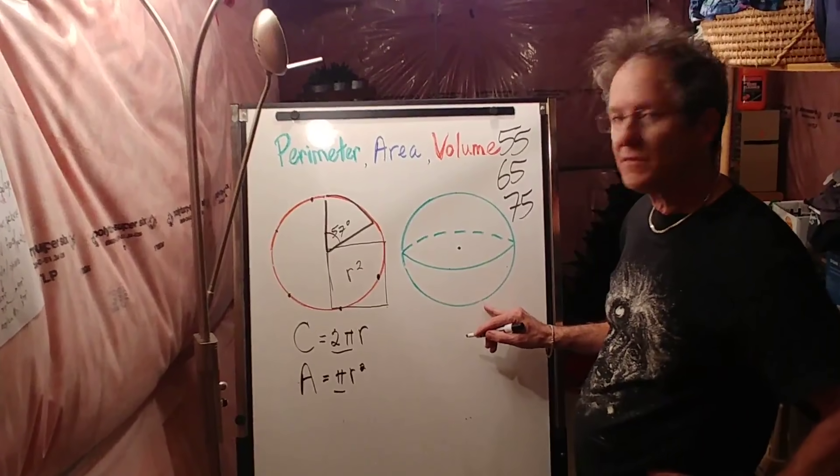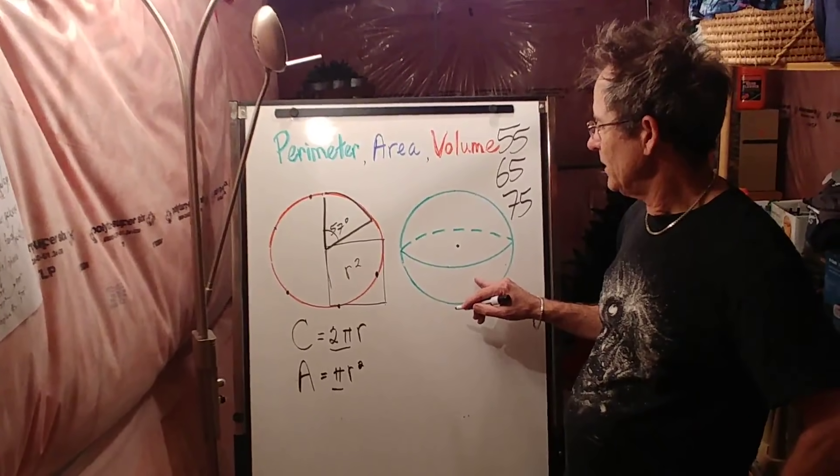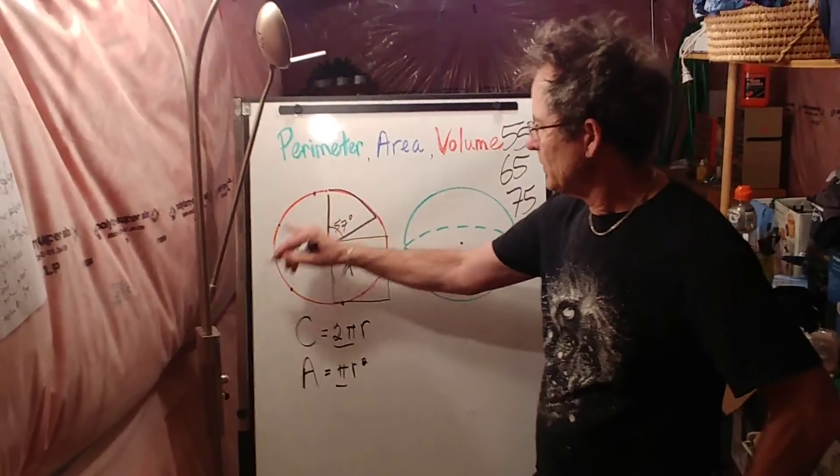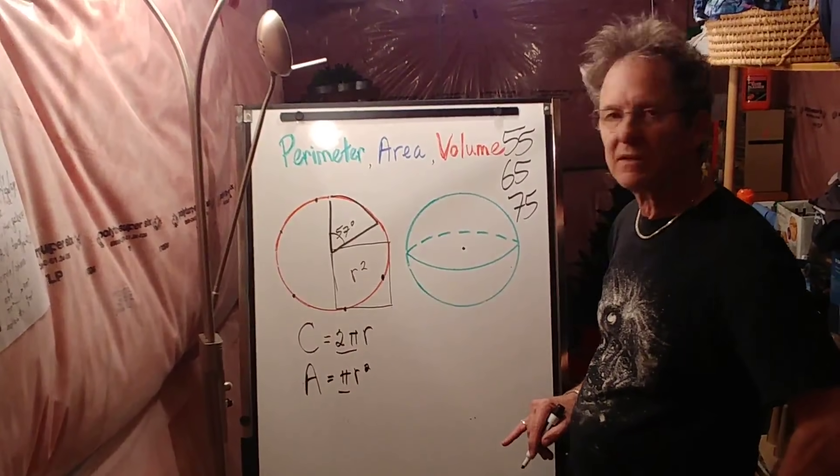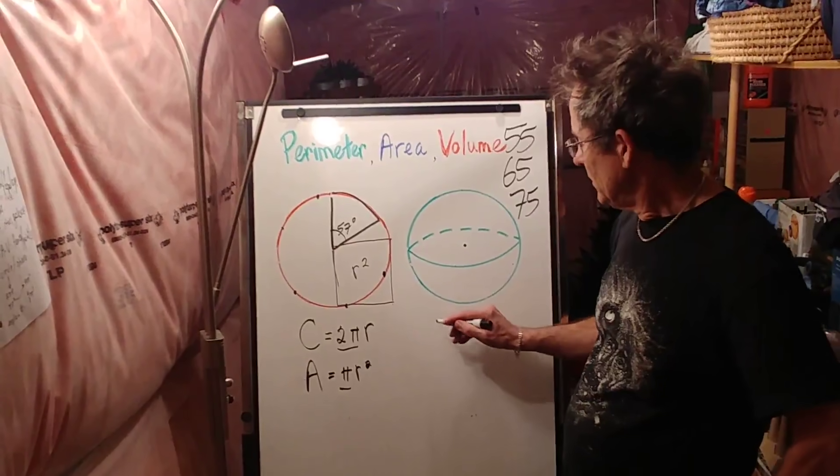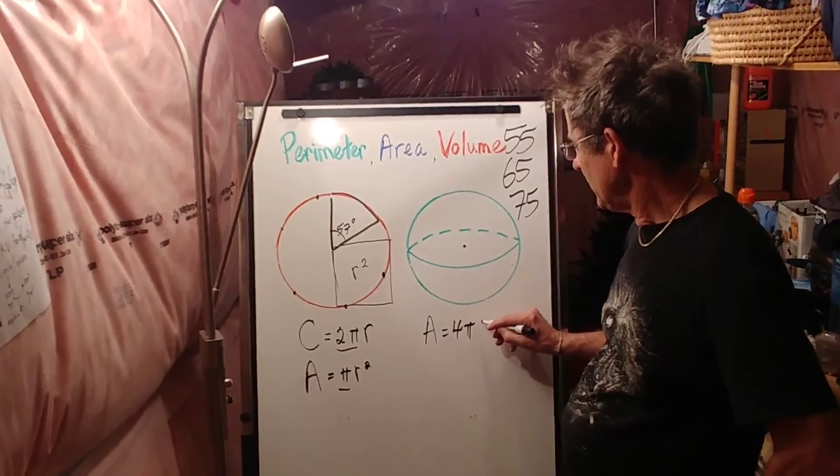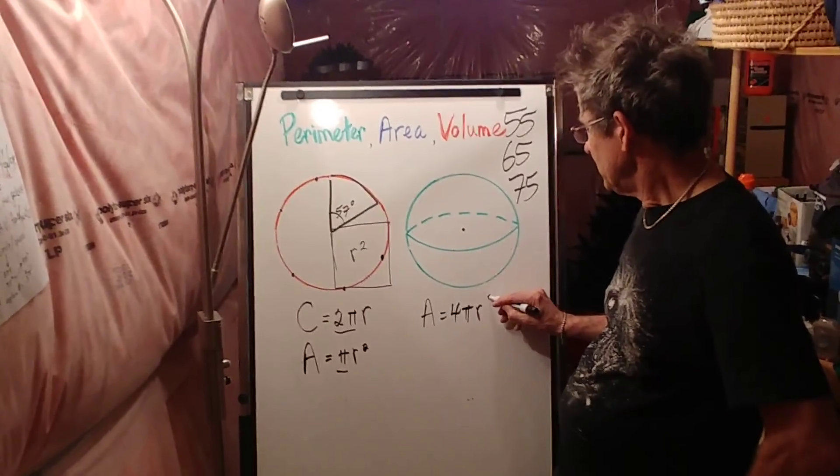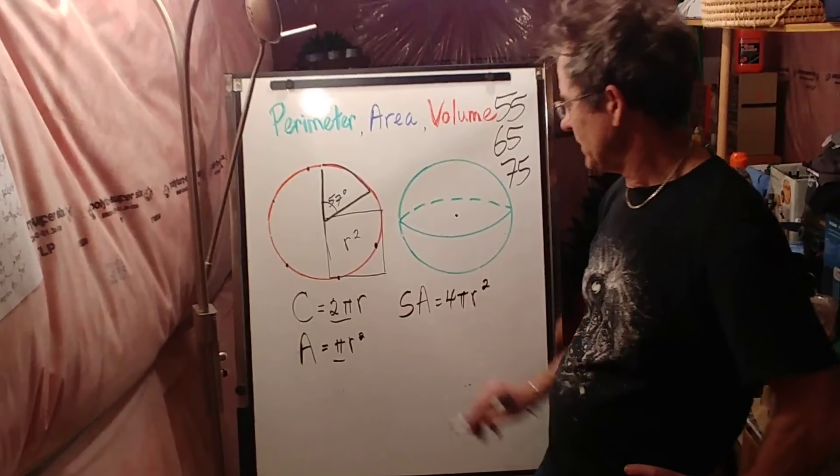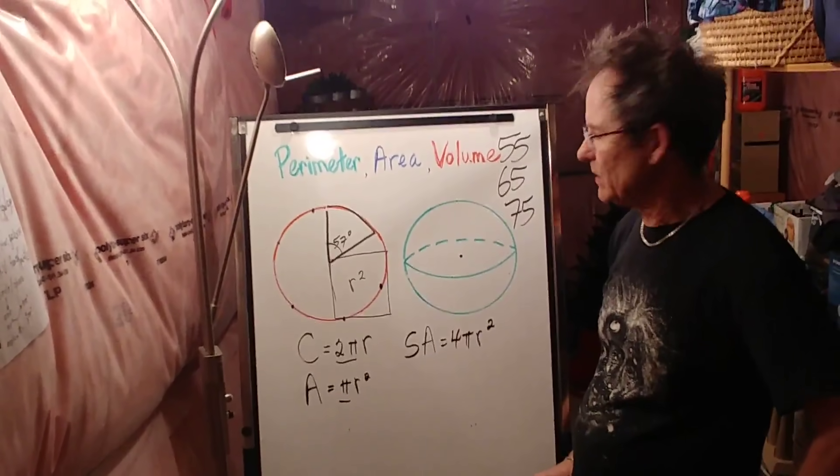Now, let's look at the sphere. What if I wanted to wrap this sphere using wrapping paper exactly the size of that circle? How many would it take? Well, it turns out it takes, believe it or not, exactly four. The area of the sphere is 4πr squared. Sometimes it's called surface area because it's a three-dimensional object.